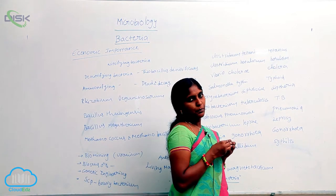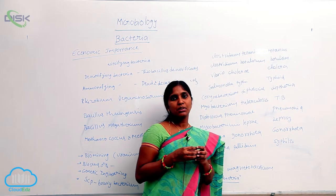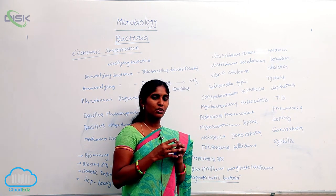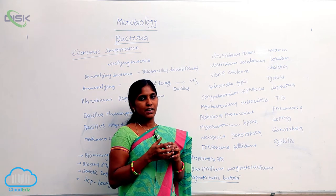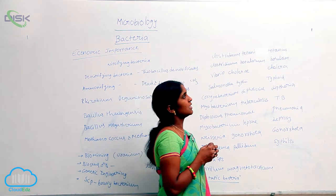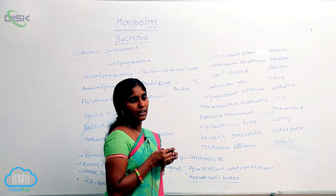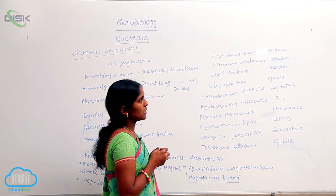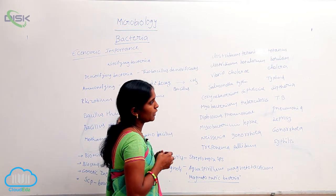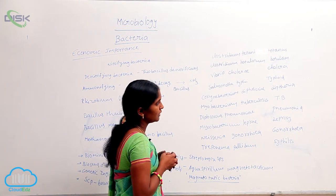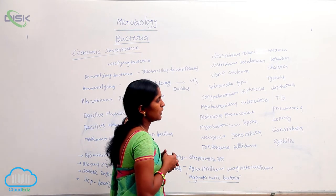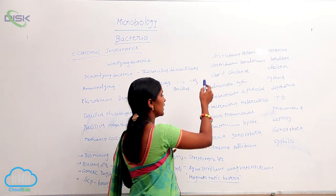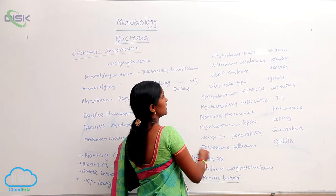Not only are bacteria useful, they sometimes show negative impacts by causing different diseases in both animals and plants. Bacterial diseases include tetanus, botulism, cholera, typhoid, diphtheria, tuberculosis, pneumonia, leprosy, gonorrhea, and syphilis, caused by different types of organisms as listed.